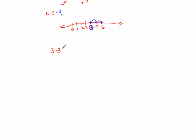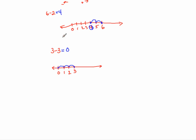We have 3 minus 3. I'm sure a lot of you understand the answer is 0, but I want us to understand this from a conceptual standpoint, so let's do it on the number line. The problem asks us to start at 3, and go to the left for 3. Remember, subtraction means to count to the left; addition means to count to the right. So we're going to count to the left 3 whole numbers: 1, 2, 3 — that puts us at 0. So 3 minus 3 is 0. Now this is a really important mathematical property.